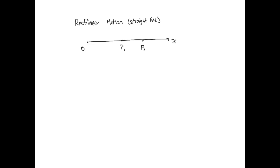Your initial position vector would be from the origin to the particle at P1 — this would be our position vector R1. Our displacement between P1 and P2 would just be this change here, so delta R is just the distance traveled from P1 to P2. Because we're moving along the x direction, we can also say that our x value is that same distance R1, so x goes from the origin to P1, and our delta x is the same as our delta R.